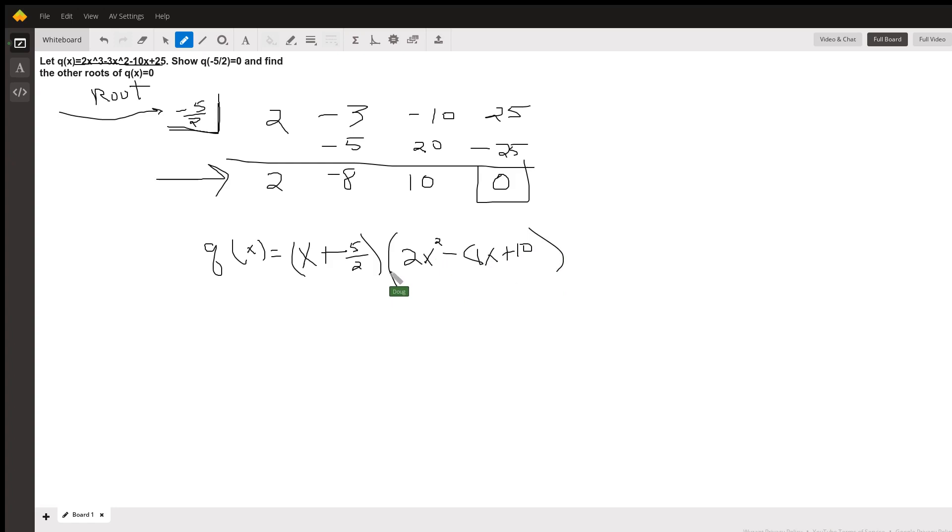And that factor will also have, could also equal zero if we're going to find the other roots. So we want to solve this quadratic equation, 2x squared minus 8x plus 10 equals zero. And before you use the quadratic formula, you might notice that every term is divisible by two.